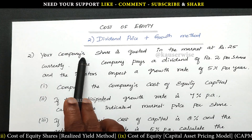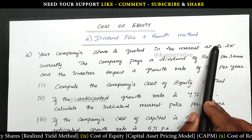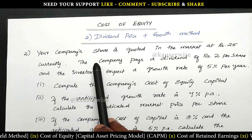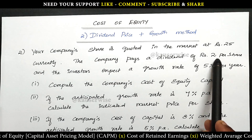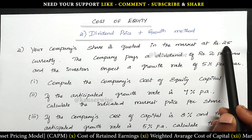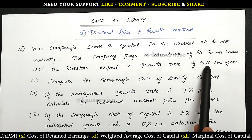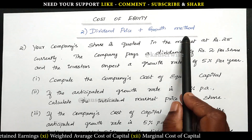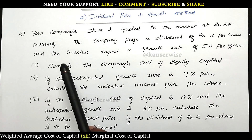See the problem: your company's shares are quoted in the market at ₹25 currently — this is the market price per share. The company pays a dividend of ₹2 per share, so D1 (dividend per share) is ₹2. Market price per share is ₹25. The investors expect a growth rate of 5% per year, so G (growth rate) is 5%. All the information is given.